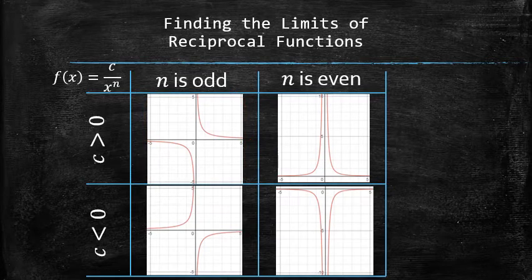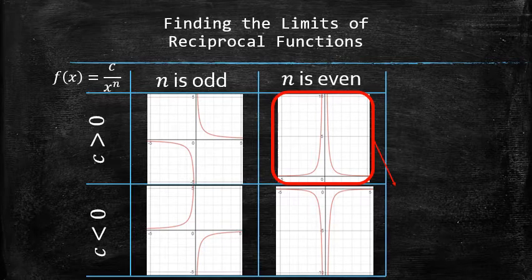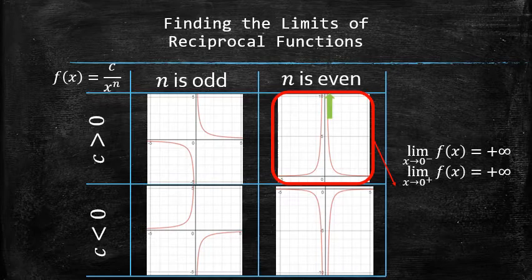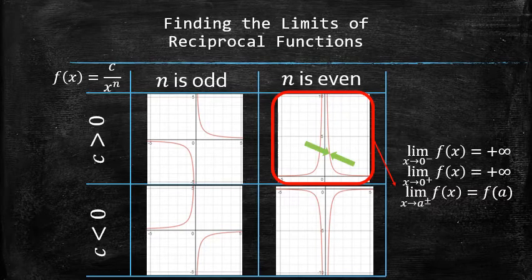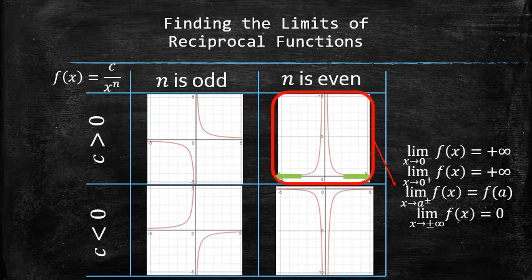The behavior of a reciprocal function with a positive coefficient and even degree in the denominator can be described with the following limits: f approaches positive infinity as x approaches 0 from the left, and f approaches positive infinity as x approaches 0 from the right. For any point other than 0, f approaches its output at that point, because reciprocal functions are continuous everywhere except 0. And f approaches 0 as x approaches positive or negative infinity.